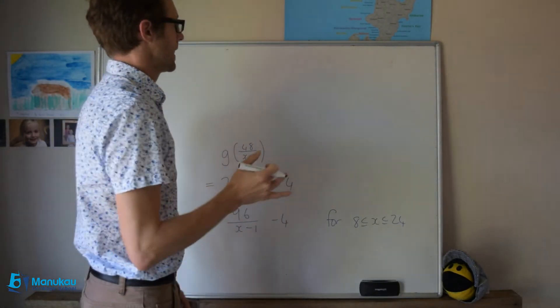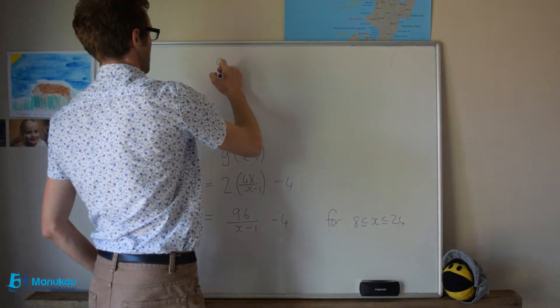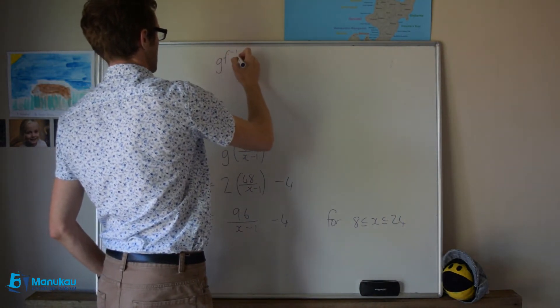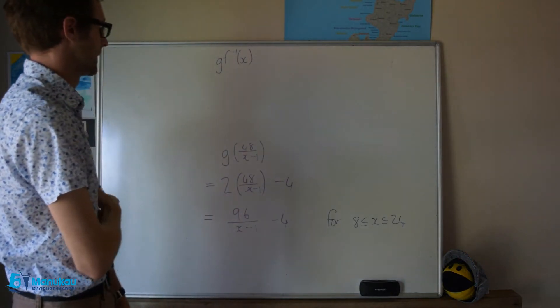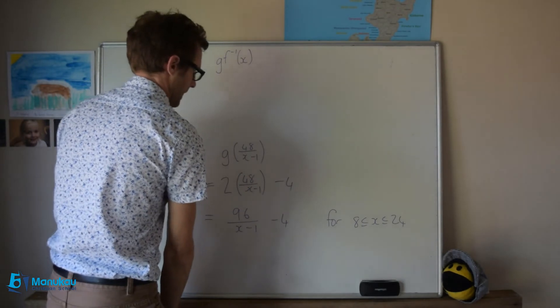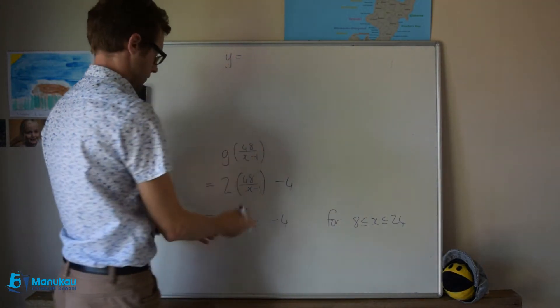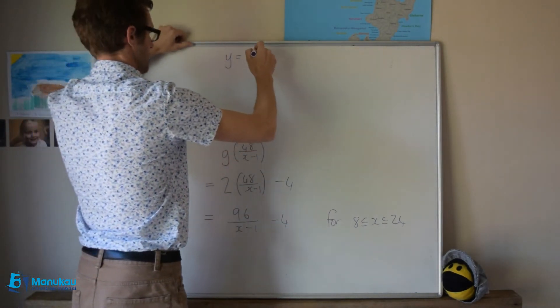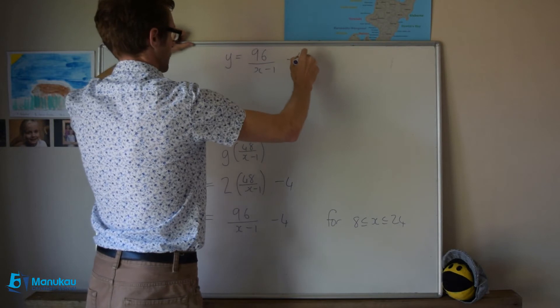This takes us to our final part in this question, where we have to find the inverse of this composite function. I like to start off by saying that we have y is equal to gf of x. So this is going to be 96 all over x minus 1 minus 4.